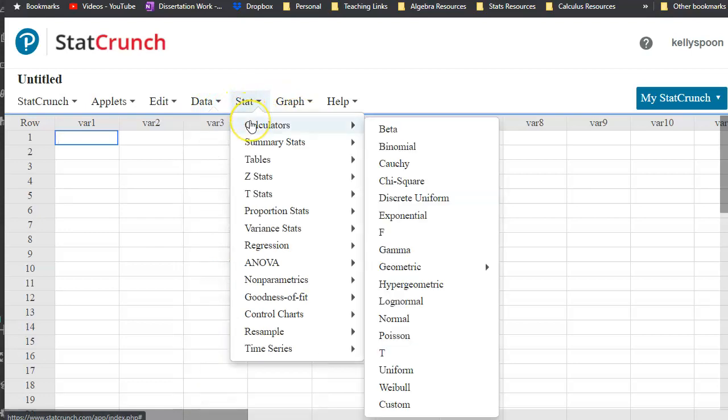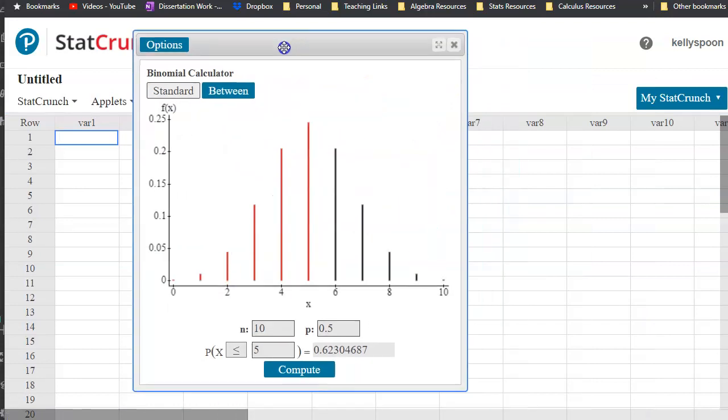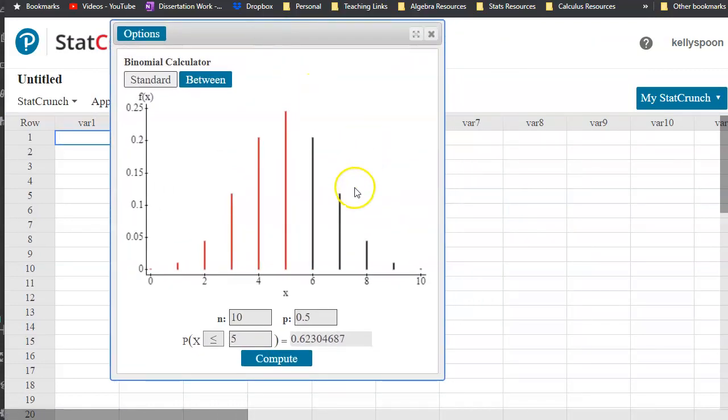When you open StatCrunch, one of the options is under Stat, Calculators, and this will do everything we need for part 5. We're going to do a binomial calculation. I really love StatCrunch over the graphing calculator or the TI-36x because it has this visual on top of everything else.